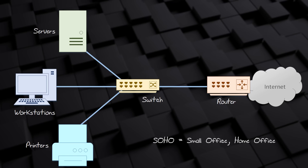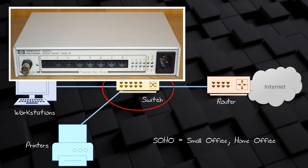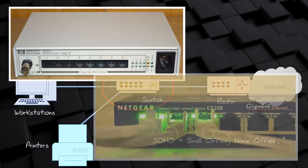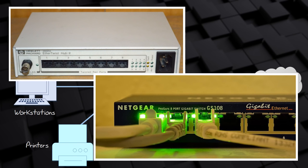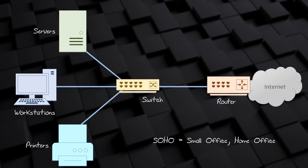SOHO networks typically have a couple of computers, a printer, a few phones and tablets — some devices will be wireless and some connected to a switch. This might be a good time to mention that people often say 'hub' when they mean 'switch.' Switches and hubs are very different things — hubs are really old technology that you generally don't see anymore, while switches are modern and commonly used. They look very similar, so it's easy to mix them up. Check the model number to see if it gives you any clues about what the device really is.